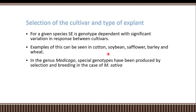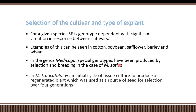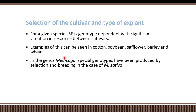Because of these various variations among cultivars, it is essential for plant tissue culture to obtain a cultivar that is beneficial and responsive to the experiment. In the genus Medicago in the Fabaceae family, special genotypes have been produced by selection and breeding in the case of Medicago sativa, through long-lasting efforts of selection and breeding.